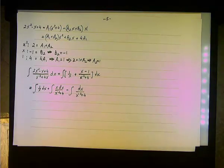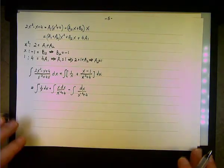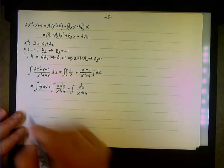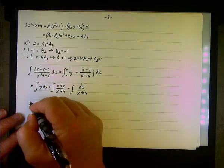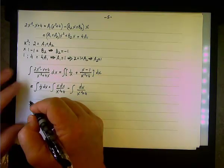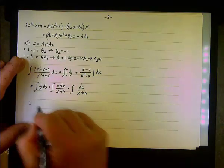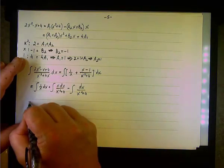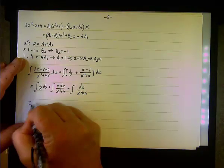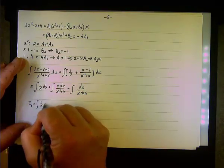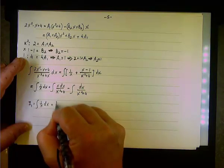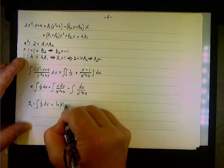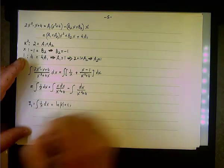The first two integrals are straightforward. The first integral I1 = ∫(1/x) dx = ln|x| + C1.